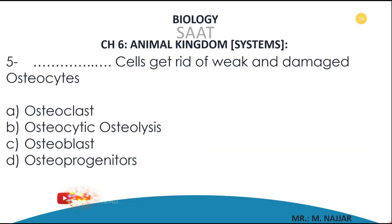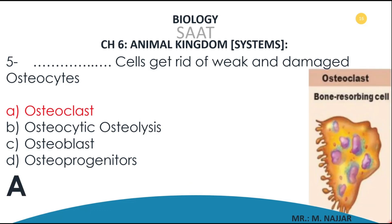Question number five: what cells get rid of weak and damaged bone? A) osteoclast, B) osteolysis, C) osteoplast, D) osteogenesis. The correct answer is A — osteoclast. If you are looking here, this is the structure of the osteoclast, also called bone-breaking cells.